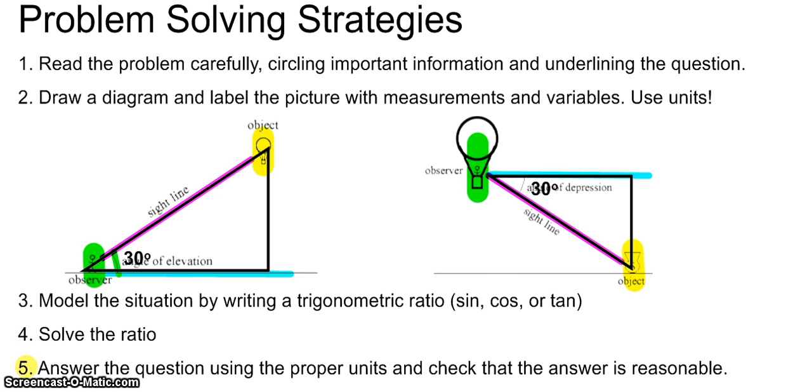Lastly in number five, we'll answer the question using the proper units such as meters, feet, miles or kilometers. And we'll also check to make sure that the answer is reasonable. For example, if I was asking you a question about the height of a building, maybe a reasonable height would be 20 feet, 30 feet, 40 feet, 50 feet, something like that. If you have an answer of five million feet, that's way too large or an answer of one foot, that's way too small. So it'll be important to check that our answer is reasonable. If it's not, we should perhaps go back and check our work.